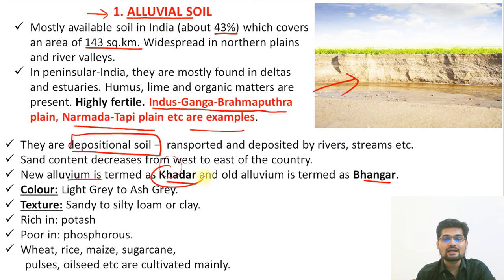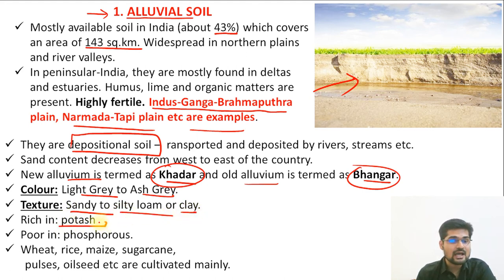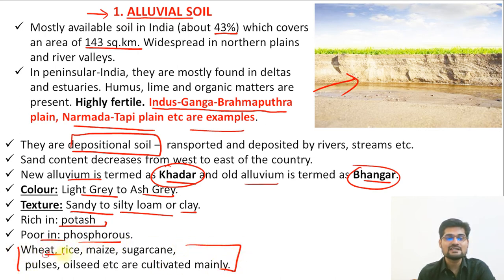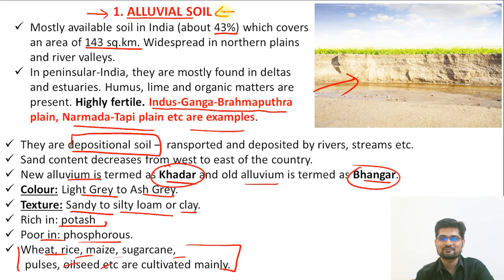Alluvial soil has colors of light gray and ash gray. Texture is sandy to silty loam or clay. It is rich in potash but poor in phosphorus. Crops grown include wheat, rice, maize, sugarcane, pulses, and oilseeds. Alluvial soil is considered one of the most fertile soils in India.